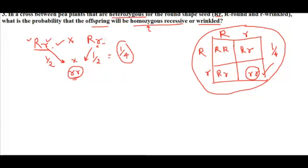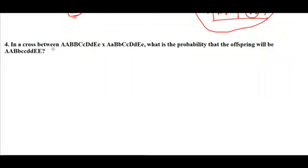With only one gene, a Punnett square is easy. But when you have two, three, or five genes it becomes very complicated. In such cases, the rule of multiplication and addition comes in handy. Let's take one more example for multiplication where we are dealing with more than one gene.